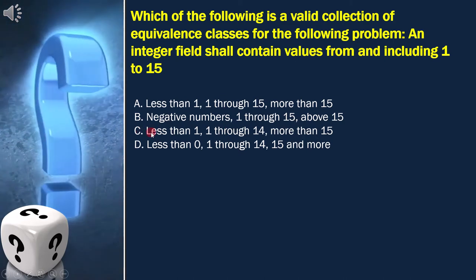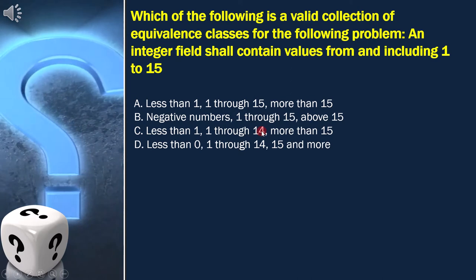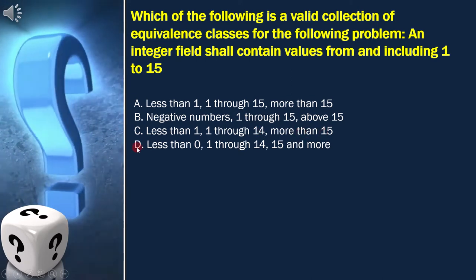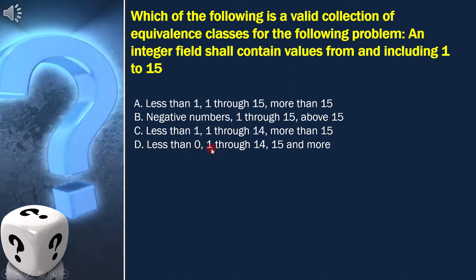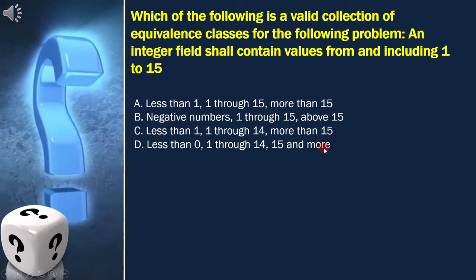Option C is less than 1, 1 through 14, more than 15. Option D is less than 0, 1 through 14, 15, and more.